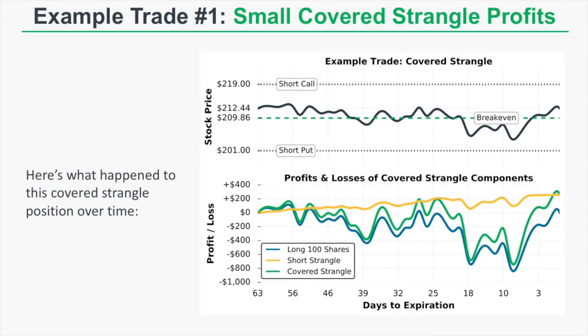Looking at this strategy through time: the top graph shows the stock price relative to the short call strike, short put strike, and break-even. The stock remains between the short strikes and ends near the $212.44 purchase price. The bottom graph shows P&L of the long shares, short strangle, and combined covered strangle. The strangle decays over time, generating steadily rising profits.